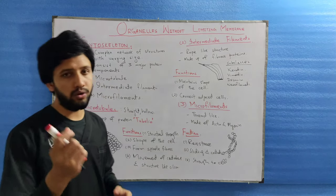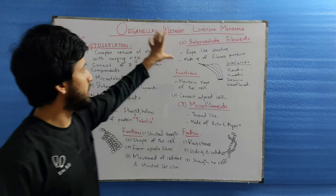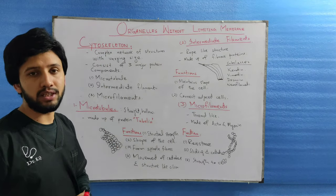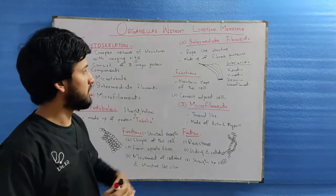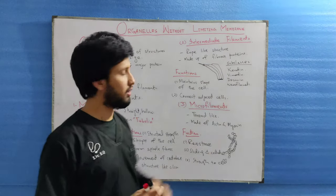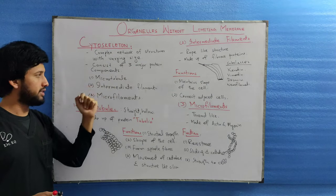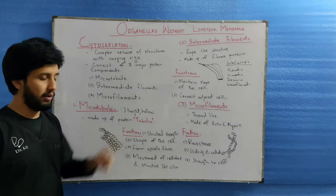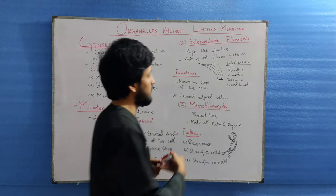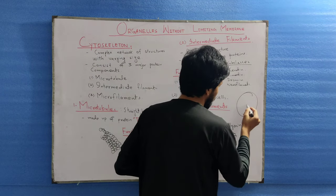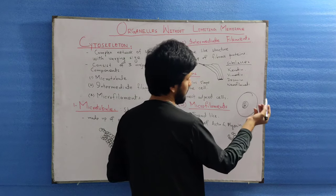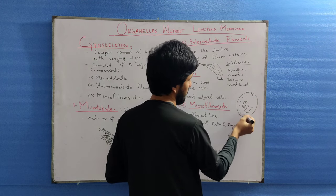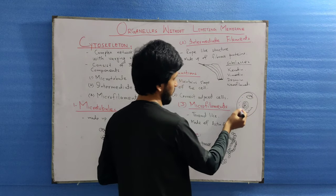Here we are with another organelle of the cell which is also without limiting membrane — the cytoskeleton. Cytoskeleton is a complex network of structures present throughout the cell. It consists of three major proteins: microtubules, intermediate filaments, and microfilaments. These are present either close to the nucleus or anywhere in the cytoplasm.